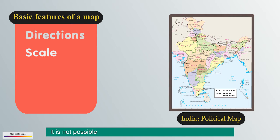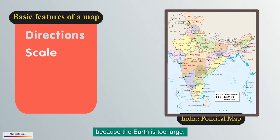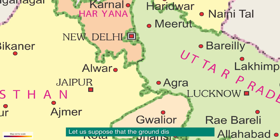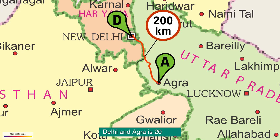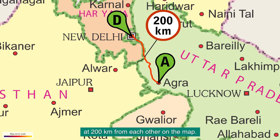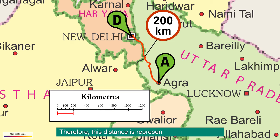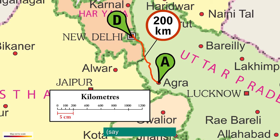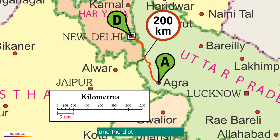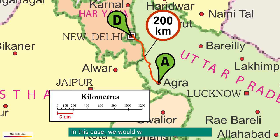Scale: it is not possible to show the actual size of the Earth on a map because the Earth is too large. For example, the ground distance between Delhi and Agra is 200 km. It is not possible to show these cities at 200 km from each other on the map. Therefore, this distance is represented by a smaller unit, say 5 cm on the map. The ratio between the distance on the ground and the distance on the map is known as the scale of the map. In this case, we would write it as 5 cm is to 200 km.